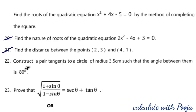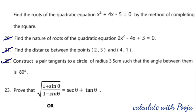Question 22: construct a pair of tangents to a circle of radius 3.5 cm such that the angle between them is 80 degrees. For this, please refer to the separate video link in the description.